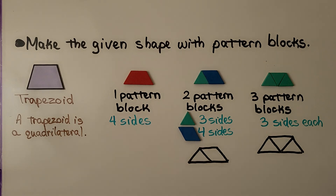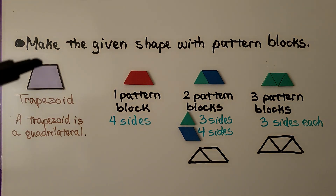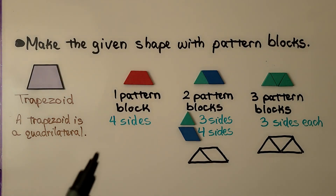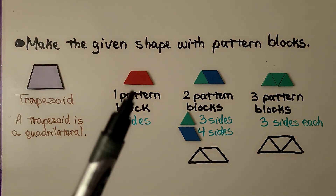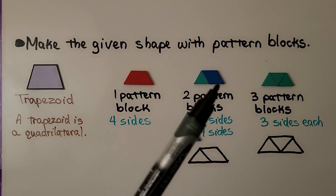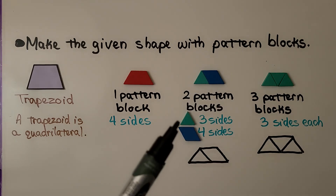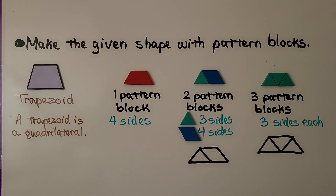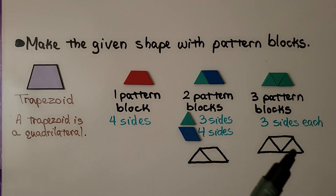Here it's telling us to make the given shape with pattern blocks, and the given shape is a trapezoid. A trapezoid is a quadrilateral — it has four sides: one, two, three, four. We can make a trapezoid with one red pattern block that has four sides. We can also make a trapezoid with two pattern blocks — a triangle and a rhombus. The triangle has three sides and the rhombus has four sides. We could also make a trapezoid with three triangles.